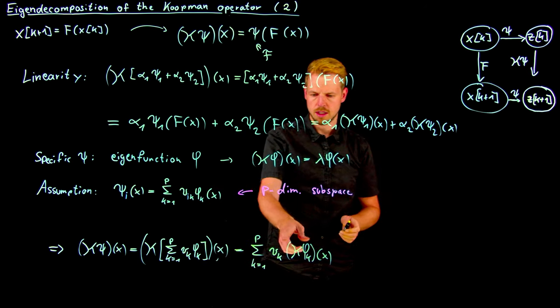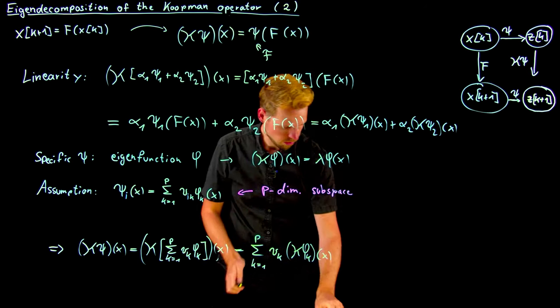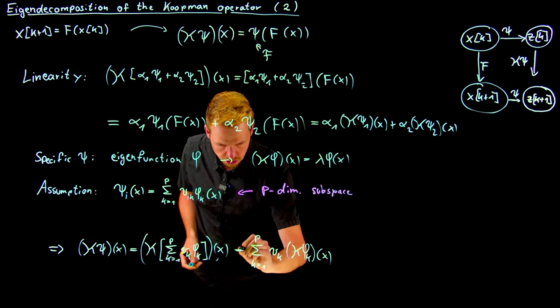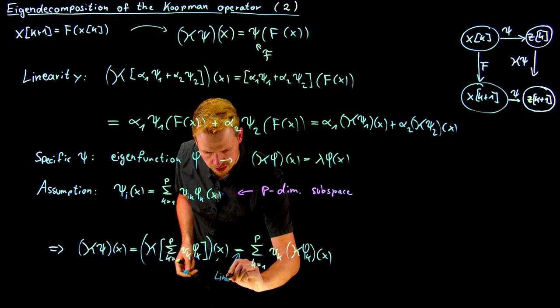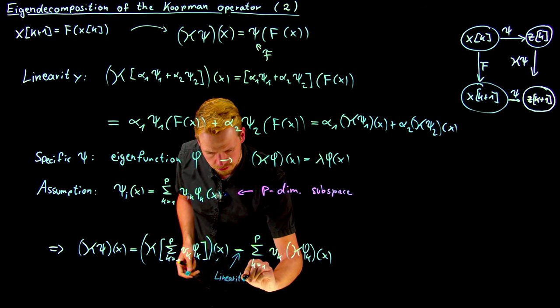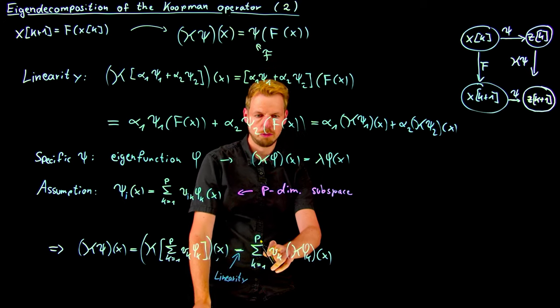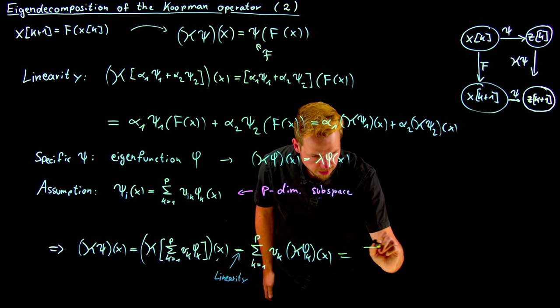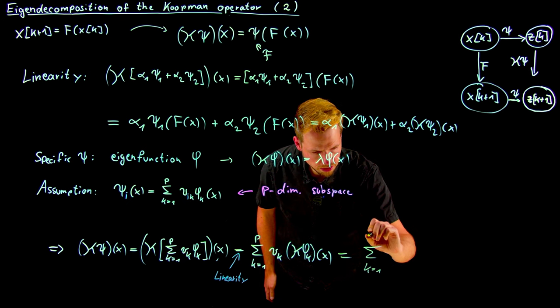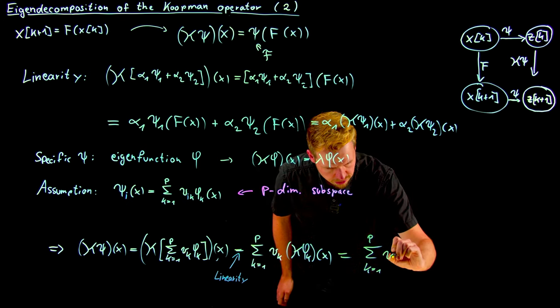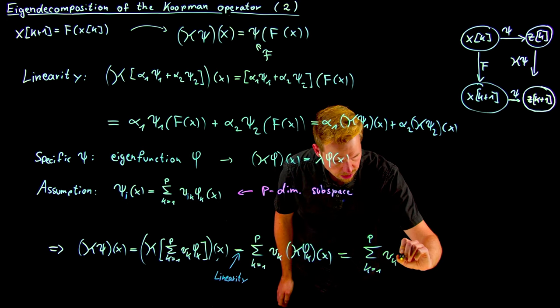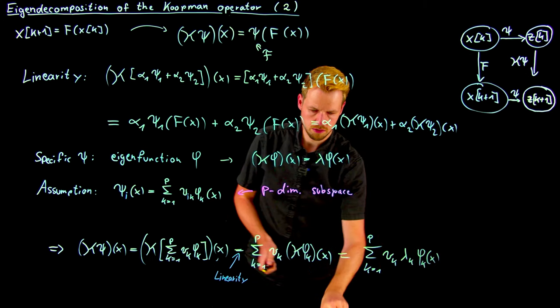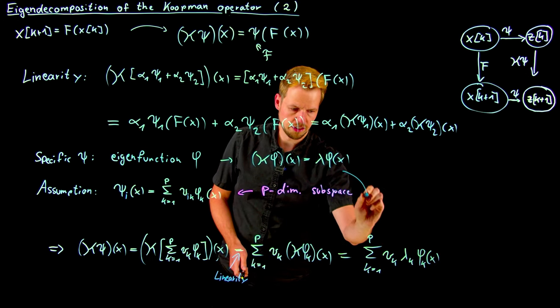And now you see, here I can use my eigenvalue. What I have done from here to here is linearity. What I'm going to do next is to exploit the eigenvalue equation. So what I'm going to get is sum k equal 1 to p v_k lambda_k phi_k of x. So I'm using exactly this here.